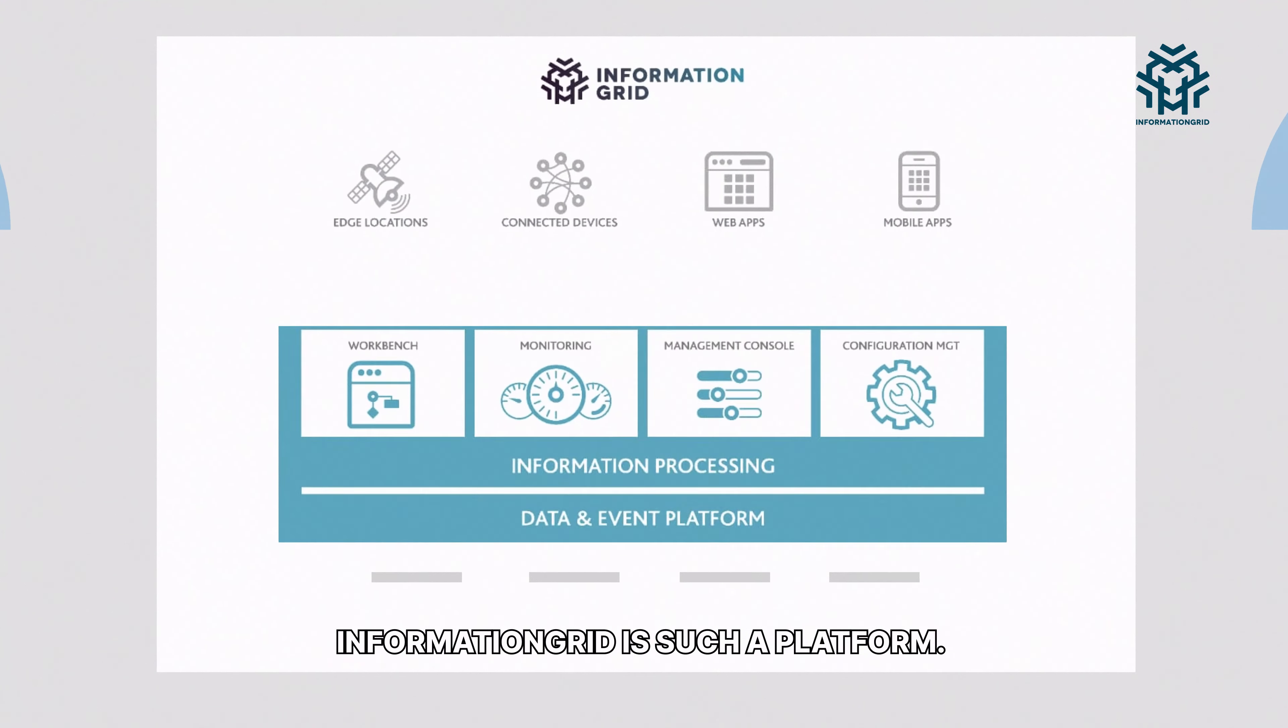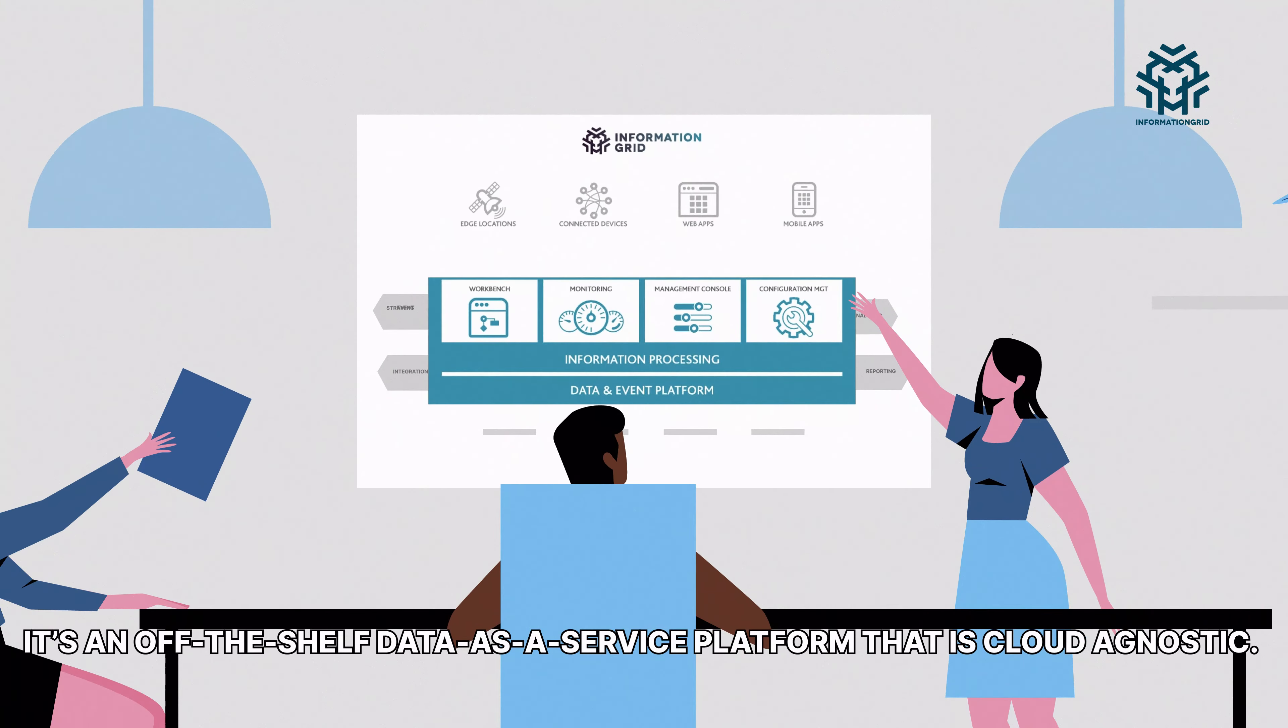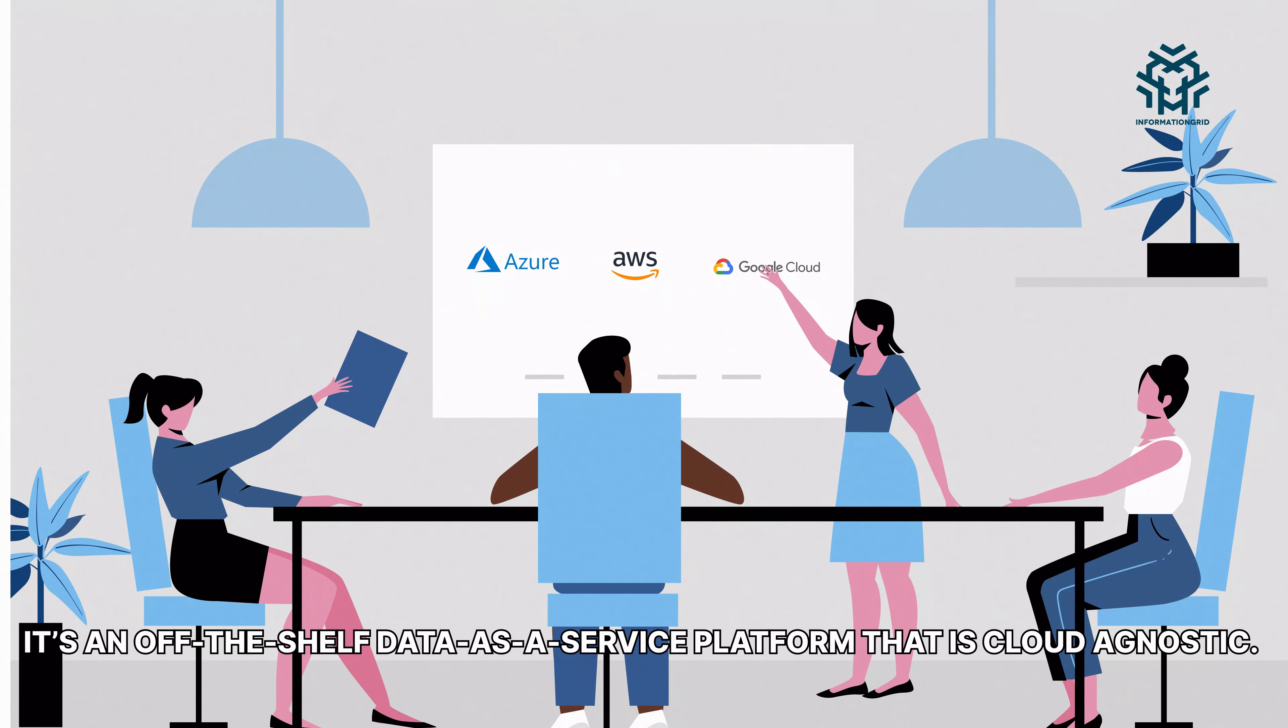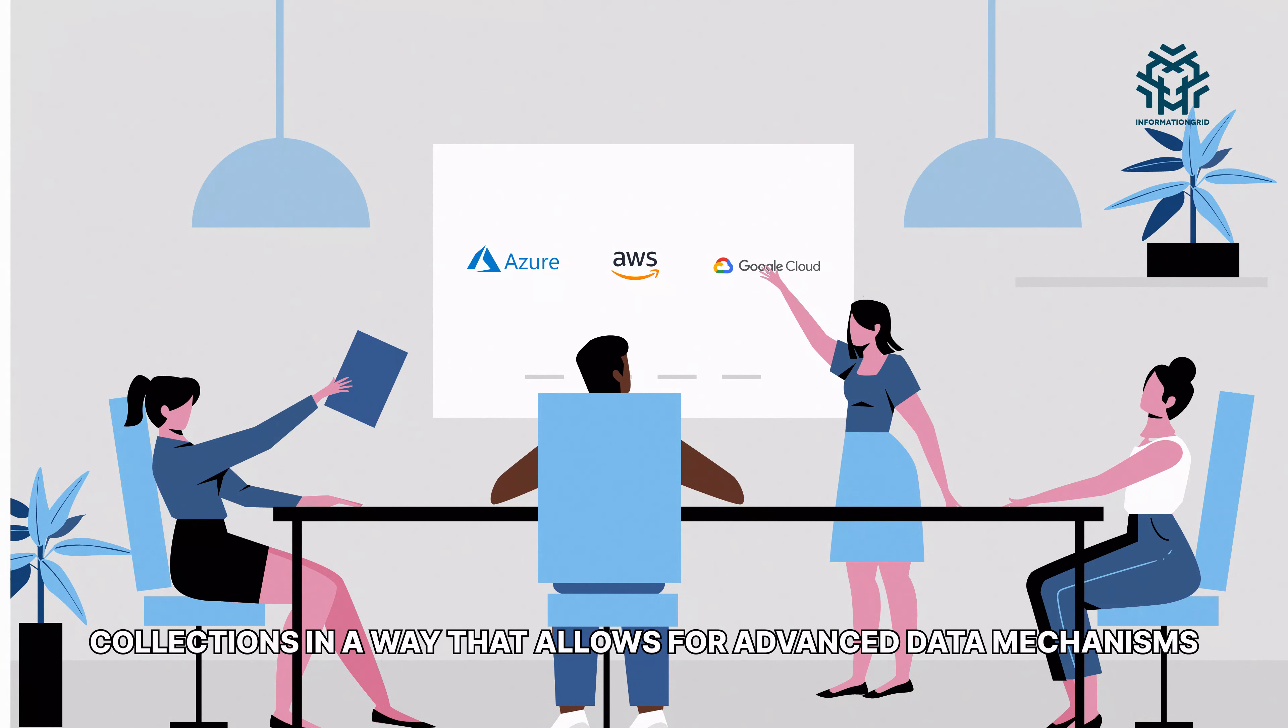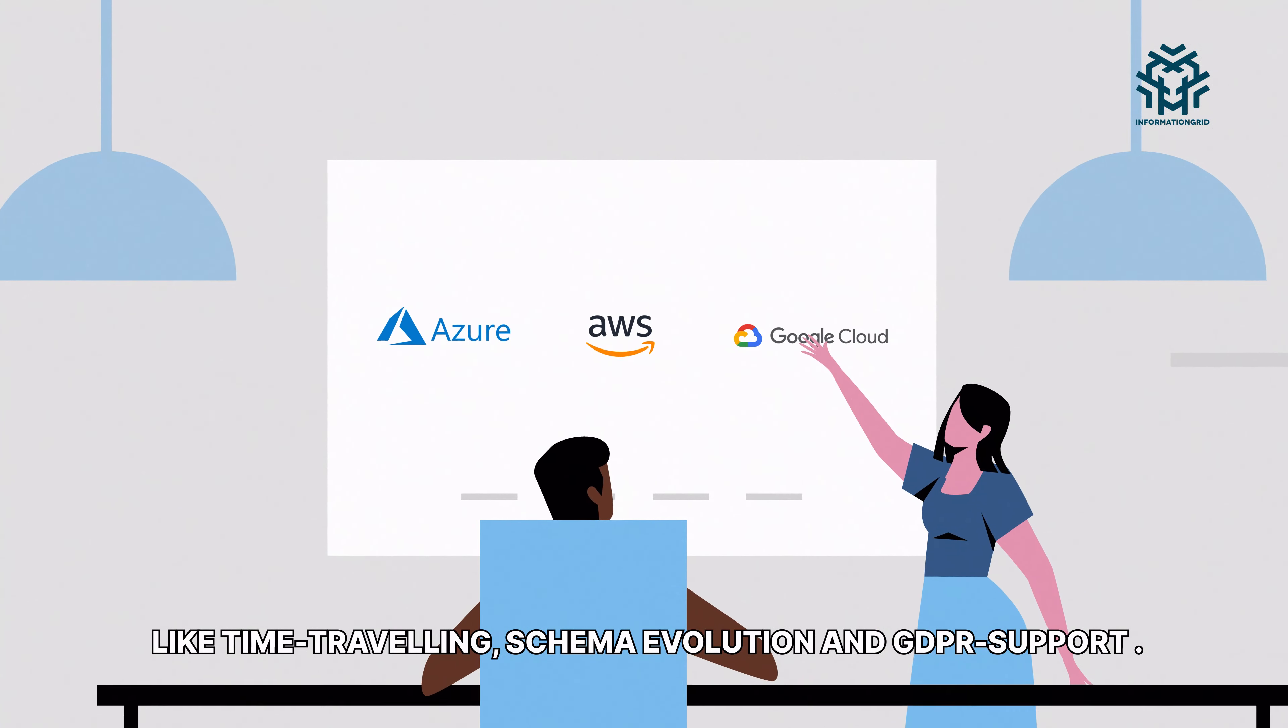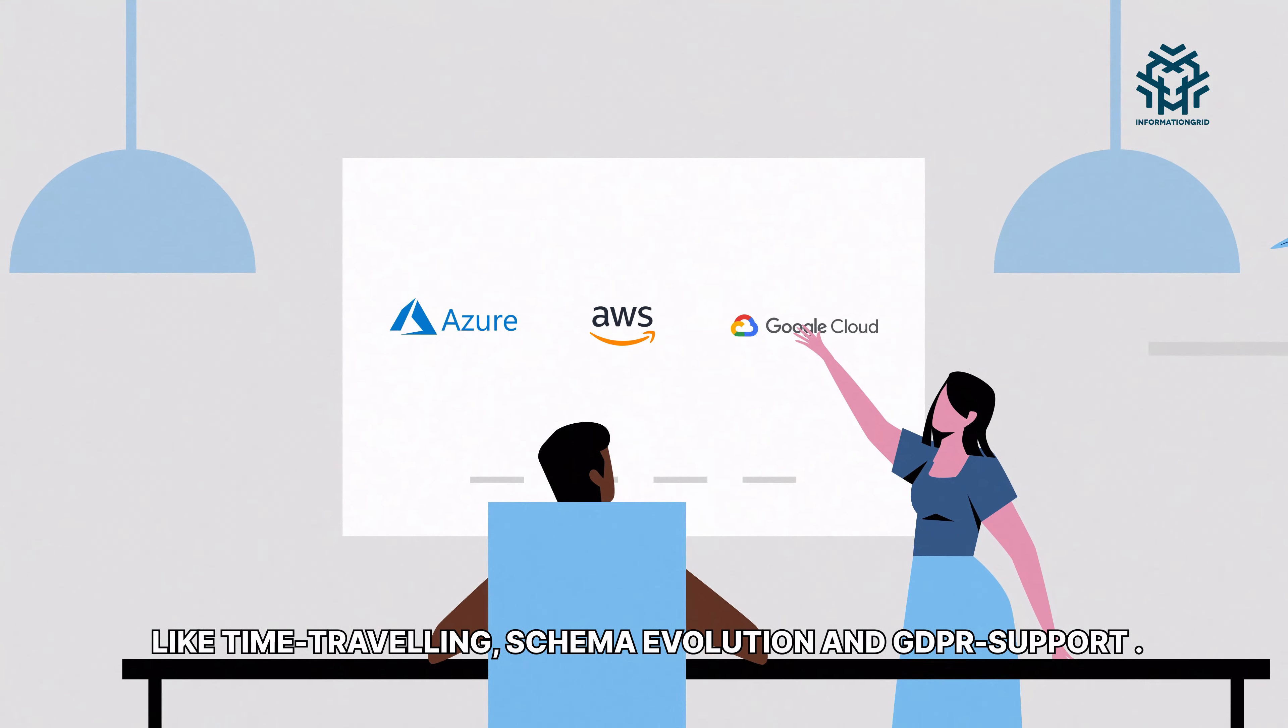Information Grid is such a platform. It's an off-the-shelf data-as-a-service platform that is cloud agnostic. It uses models to describe event collections in a way that allows for advanced data mechanisms like time traveling, schema evolution, and GDPR support.